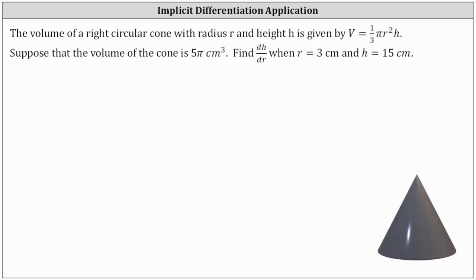Well, to begin, if we know the volume is equal to one-third π r squared h, and the volume is 5π cubic centimeters, our implicit equation is 5π equals one-third π r squared h.